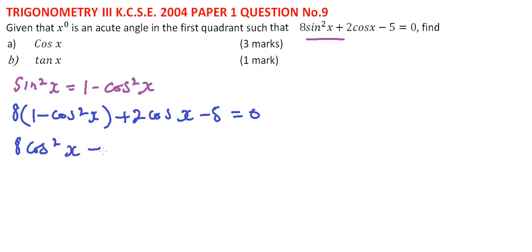This gives us 8cos²x - 2cos x - 3 = 0. This is a quadratic equation and we can factorize it. When you factorize it, you have 4cos x - 3, and then 2cos x + 1 = 0.